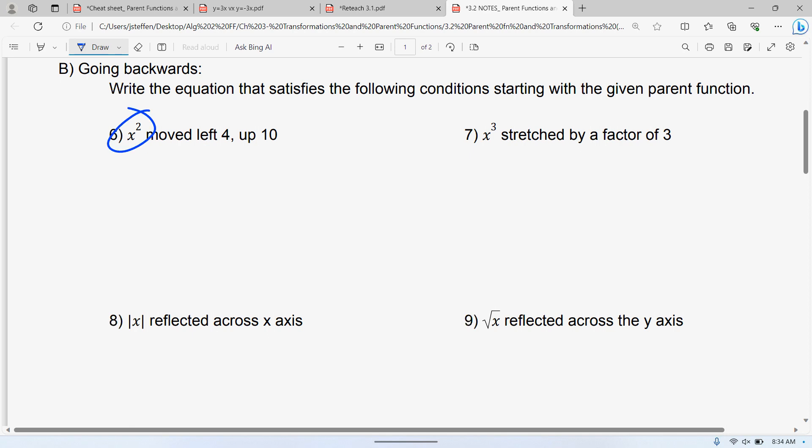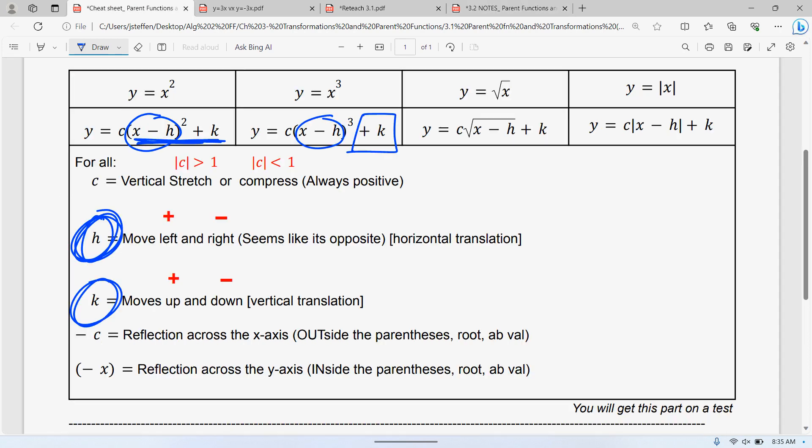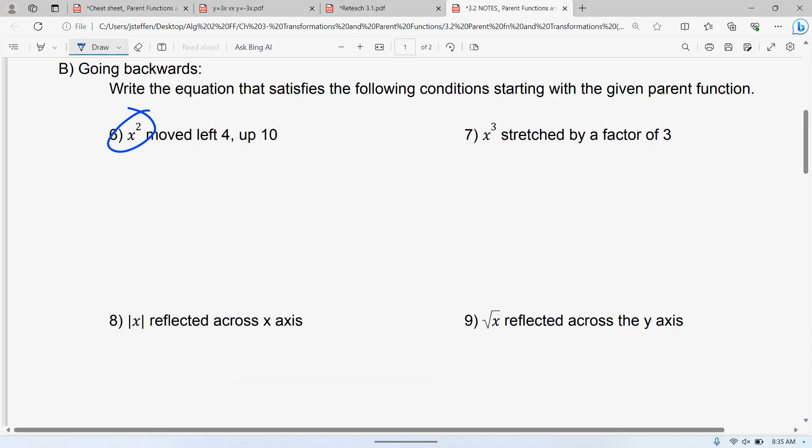I'm going to start by giving you your parent function: x squared, and it's moved left four and up ten. Now, to look at this, we're going to say, okay, well, left and right is the h, up and down is the k. You totally can. I'm hoping by now you don't have to. But again, you'll get that sheet along the test. So if you need that, that's fine.